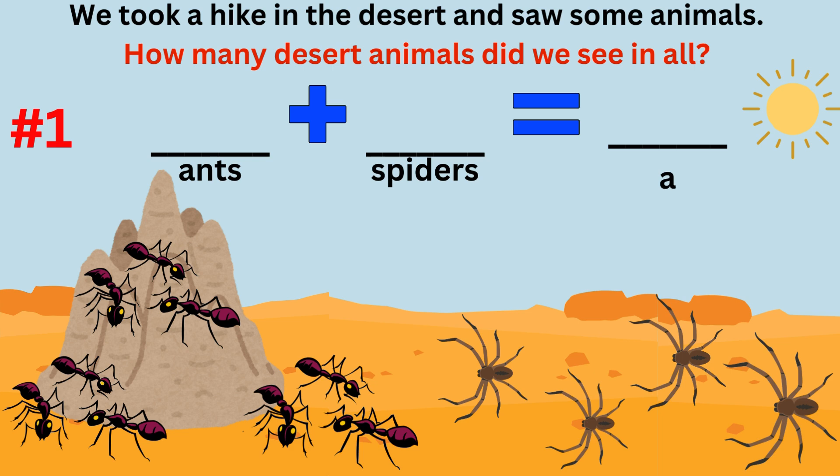Word problem number one: we took a hike in the desert and saw some animals. How many desert animals did we see in all?